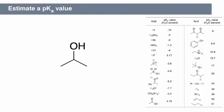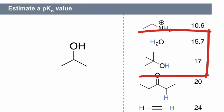The most similar compounds are water and tert-butanol. That tells us that isopropanol has a pKa value of 16 or 17.